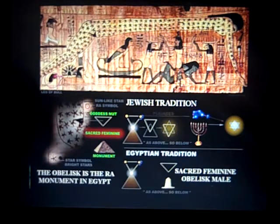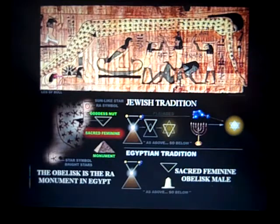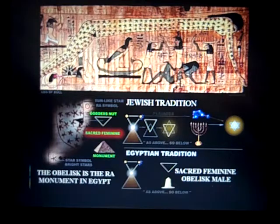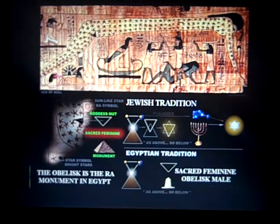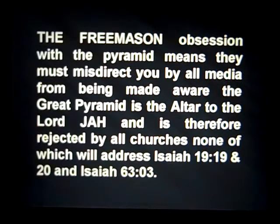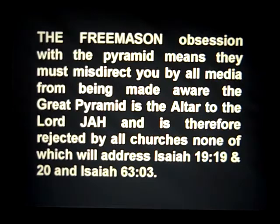Getting back to the beginning of some symbology — all Masonic and where it started from. These were sent to us by Ira. The obelisk is the male, and above is the triangle of the sacred feminine in the heavenlies — 'as above, so below.' The menorah, the Star of David, the Freemason obsession with the pyramid — they misdirect you from being made aware that the Great Pyramid is the altar to the Lord Yah, therefore rejected by all churches, none of which will address Isaiah 19:19-20 and Isaiah 63:3.